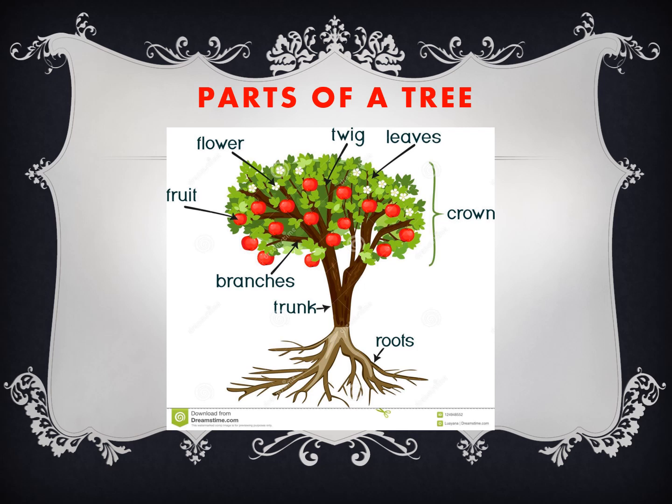If you look carefully, there are roots at the bottom — this is the underground part of the tree, below the soil. It absorbs water and nutrition from the soil. Then we have the trunk, also called the stem, which is covered with a hard covering called bark.